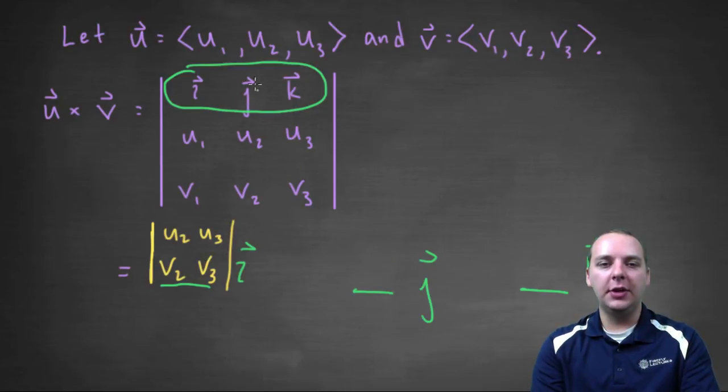We're going to do the same thing for j. Delete the row and column j is in. You see the four entries left over. We'll have u1, u3, v1, v3.